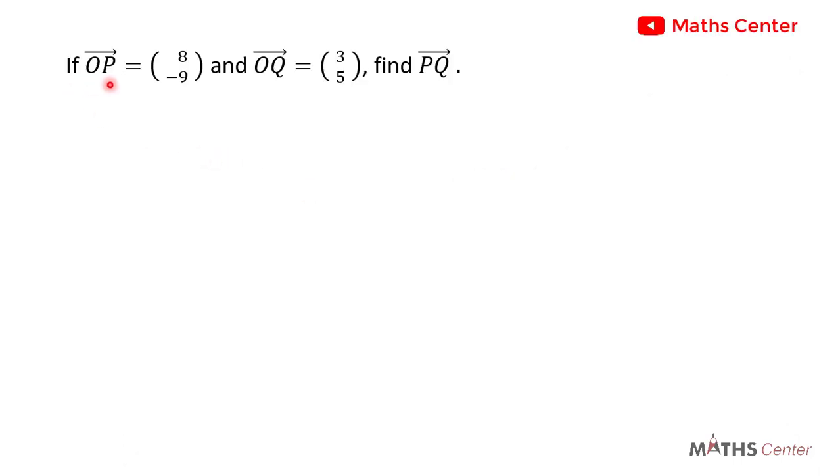If the vector OP is equal to (8, -9) and the vector OQ is equal to (3, 5), find the vector PQ. The vector PQ is given by the position vector of Q,